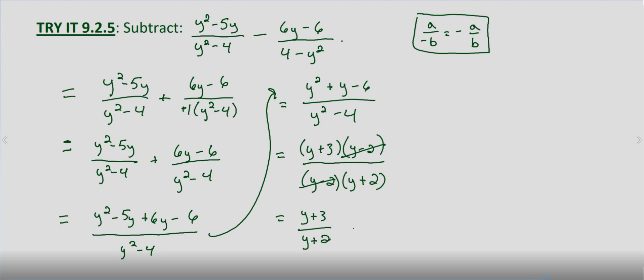And remember to note that since we have y squared minus four in the denominator, that means y cannot equal negative two, and y cannot equal two, because if we did, then our denominators would end up being zero. Either y squared minus four or four minus y squared, either way, negative two or two would yield a denominator of zero.